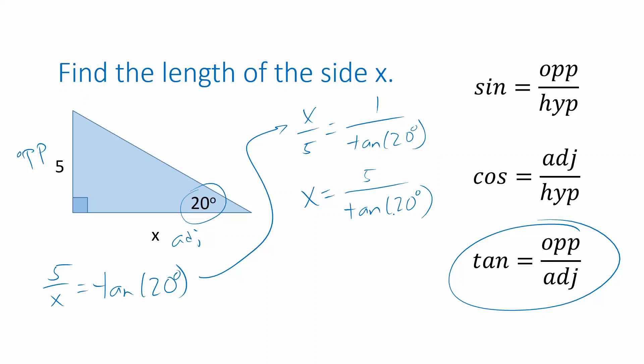That's an exact answer, which you can also write using the cotangent function as 5 · cot(20°). But what we actually want to do is get a decimal approximation by plugging that into a calculator, which gives approximately 13.74.